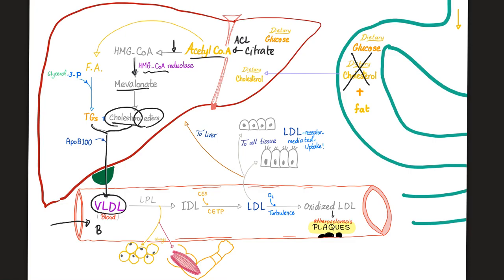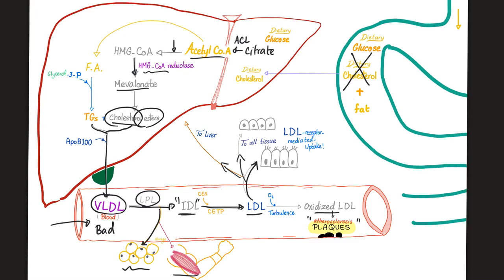VLDL — very low density lipoprotein — is bad. By LPL (lipoprotein lipase), it becomes intermediate density lipoprotein (IDL), with some fat stored in adipose tissue and muscles along the way. IDL then becomes low density lipoprotein (LDL). LDL can be oxidized in the vessel wall forming oxidized LDL, leading to atherosclerotic plaques. We try to distribute LDL to the liver and other tissues via LDL receptor-mediated uptake.